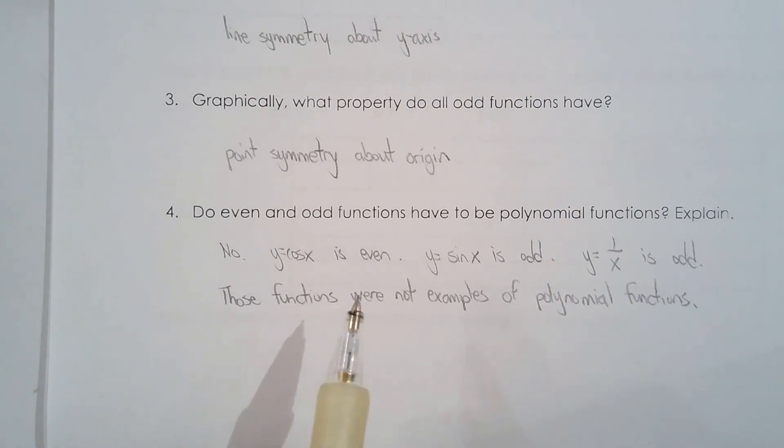So cosine has line symmetry about the y-axis. Sine x has point symmetry about the origin. And 1 over x has point symmetry about the origin. It's just a small detail that I really don't want you guys to be confused over, because a lot of students have that misconception.